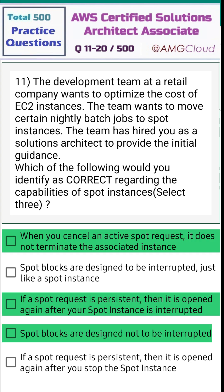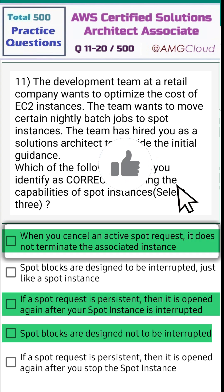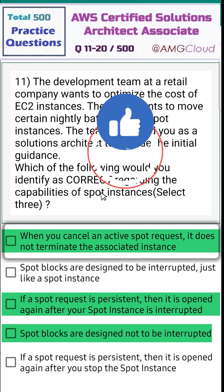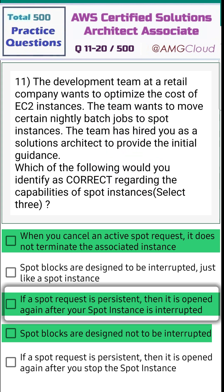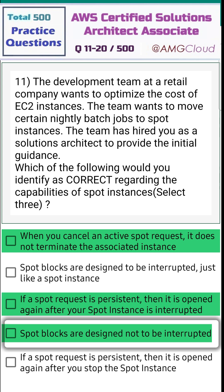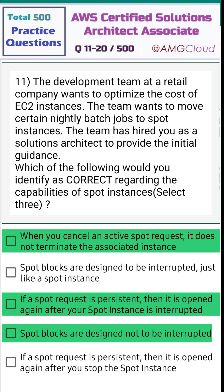The correct answers are option one — when you cancel an active spot request, it does not terminate the associated instance; option three — if a spot request is persistent, then it is opened again after your spot instance is interrupted; and option four — spot blocks are designed not to be interrupted.